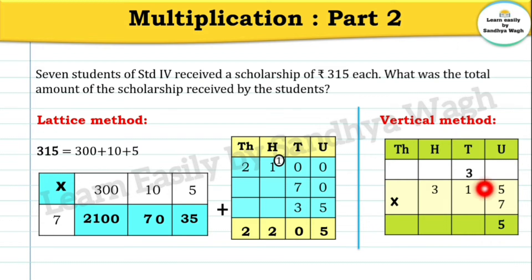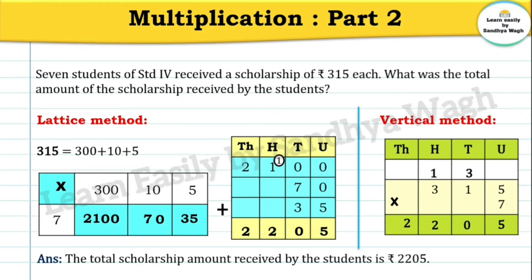7 plus 3 (carry) equals 10. We can't write 10 in the tens place because 10 tens means 100, so we write 0 in the tens place and carry 1 to the hundreds place. Now multiplying 3 by 7: seven threes are 21, plus 1 carry equals 22. We can't write 22 in the hundreds place because 22 hundreds means 2200, so we write 2 in the hundreds place and 2 in the thousands place.